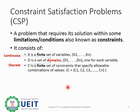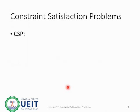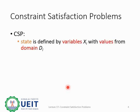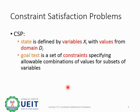Each variable in the variable set can have different domain values. Variables can choose values from the domain set based on some constraints. A solution to CSP is found when all variables are assigned values from the domain set and none of the constraints is violated. This is also the goal test for a CSP problem.